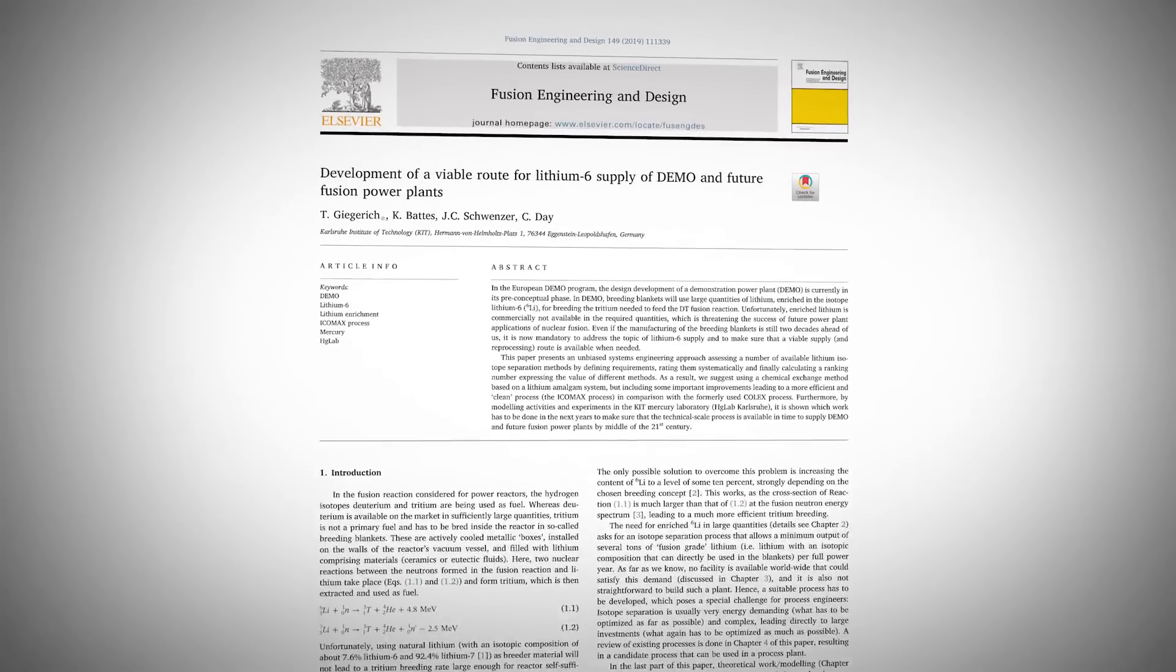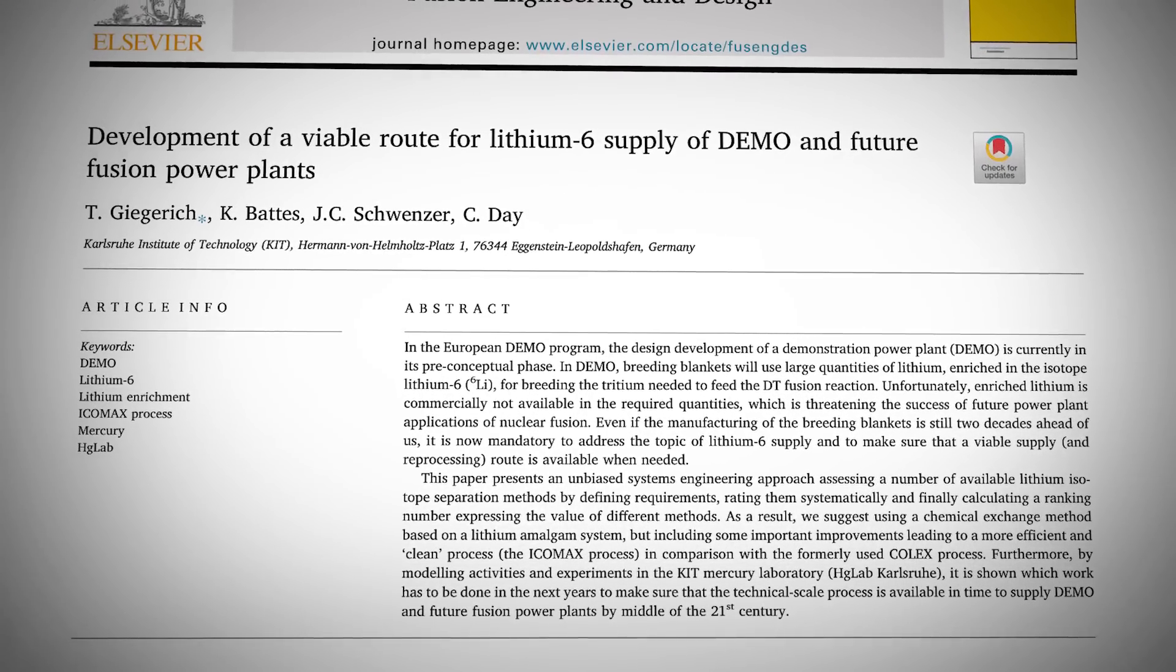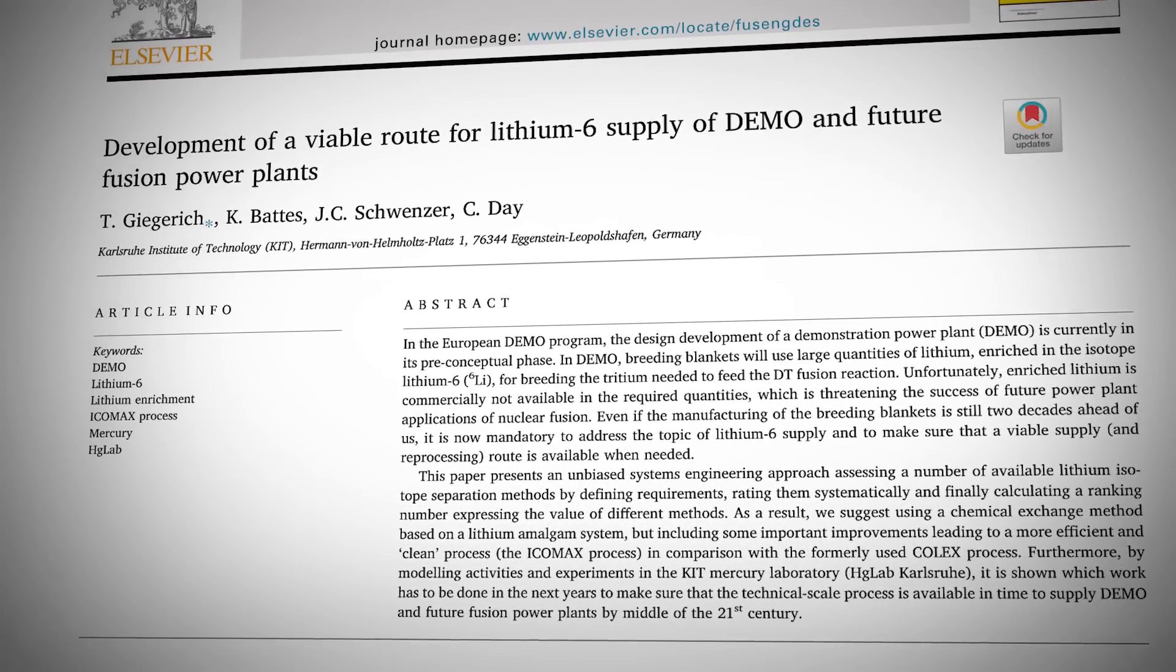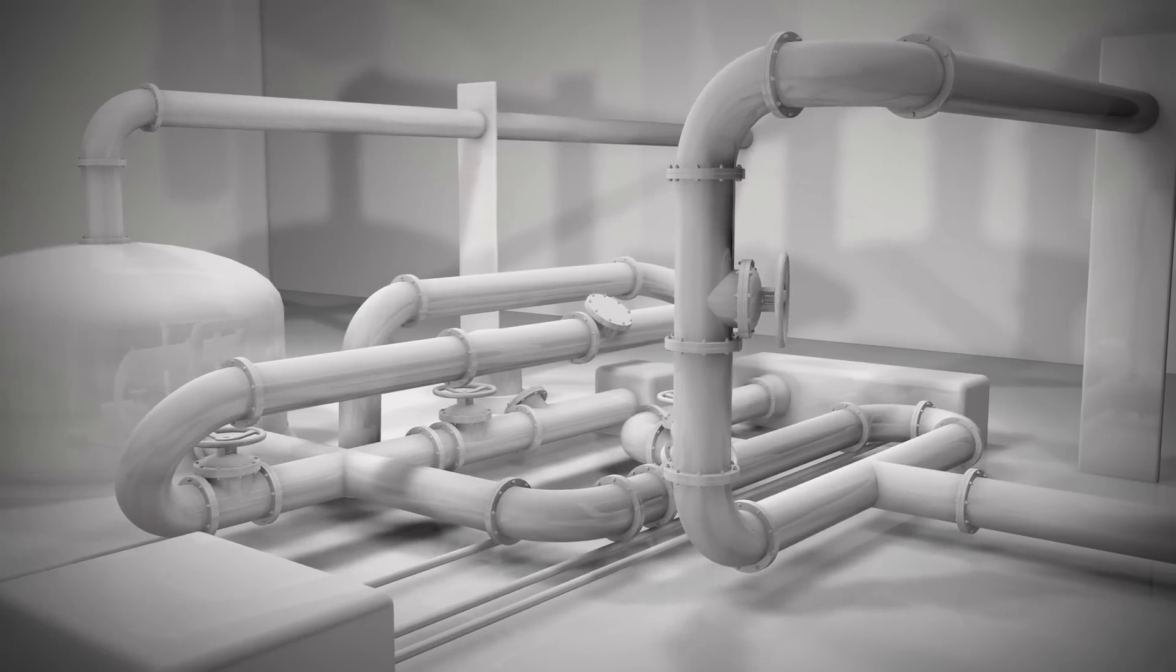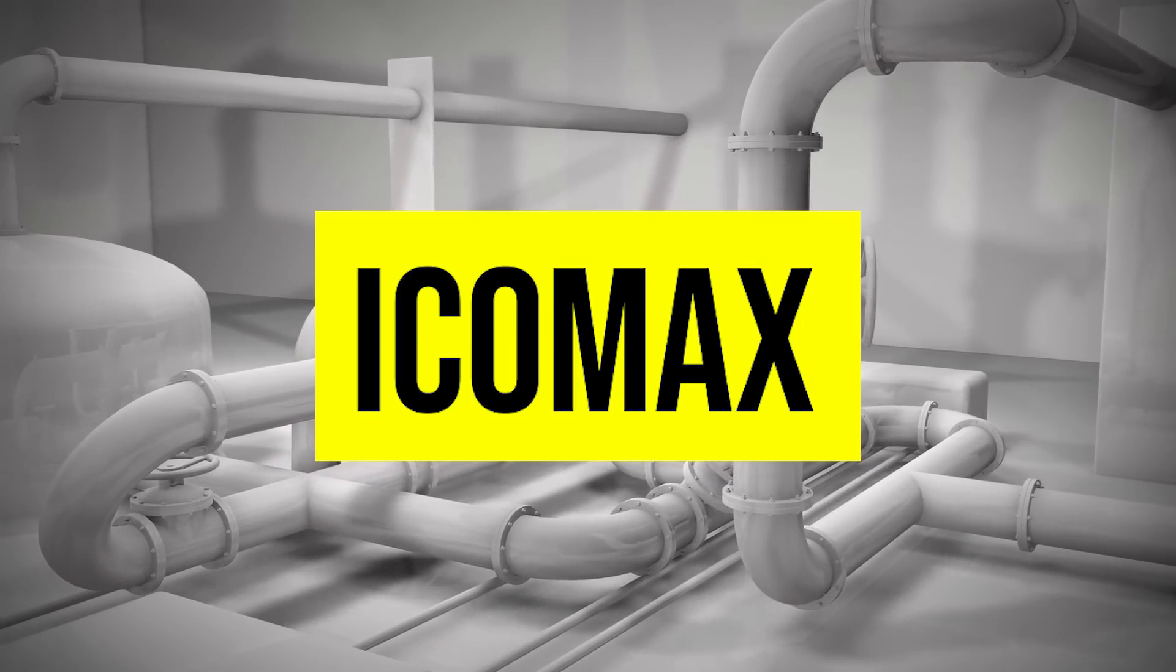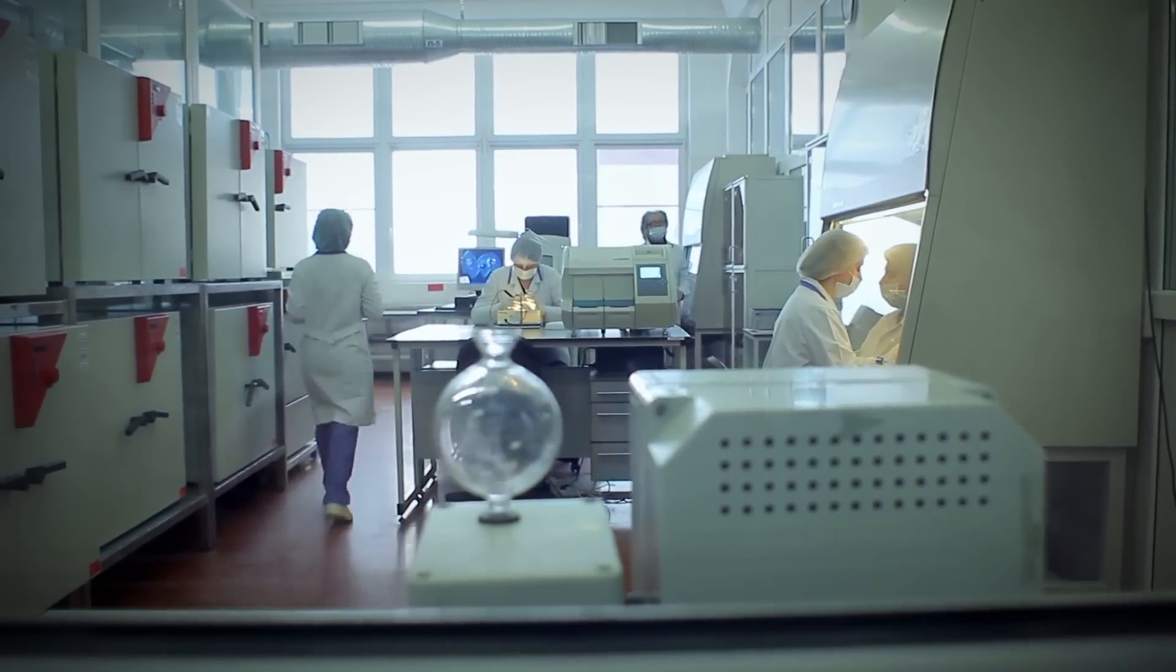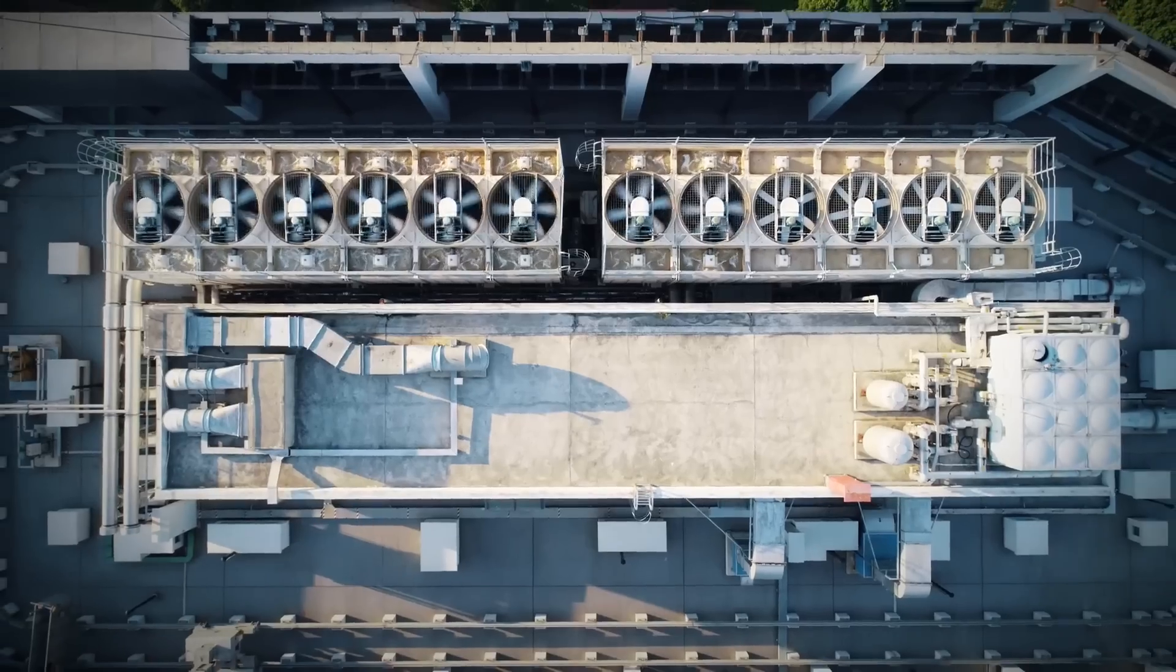This begs the question, how will we get enough enriched lithium for the tritium breeding blanket? Well, a paper titled Development of a Viable Route for Lithium-6 Supply of DEMO and Future Fusion Power Plants proposed a new process called ICOMAX, which would enable safe and sustainable lithium enrichment. This is still an active research project though, meaning it is yet to be proven at the required scale.